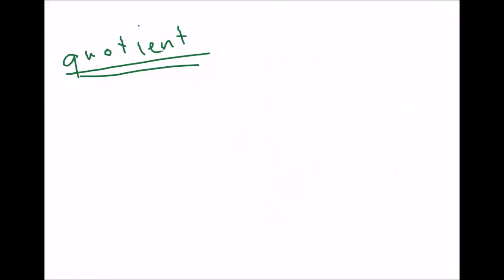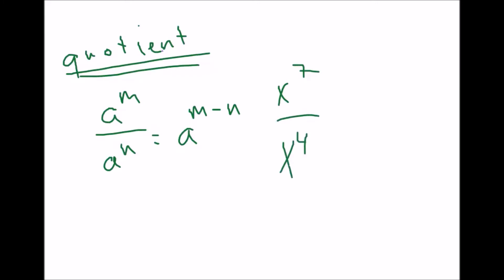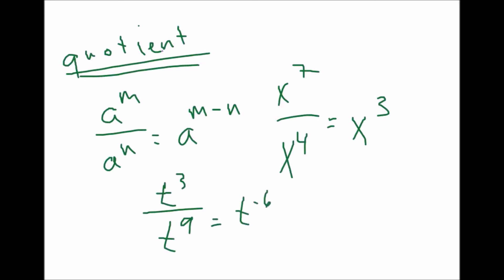The next rule is the quotient rule: a to the m over a to the n equals a to the m minus n. In a real example, x to the 7th over x to the 4th gives you 7 minus 4, leaving you with x cubed. In another example where the bigger number is on the bottom — t cubed over t to the 9th — you get 3 minus 9, which is t to the negative 6. That really means 1 over t to the 6th because the negative sign tells you it needs to go to the bottom.